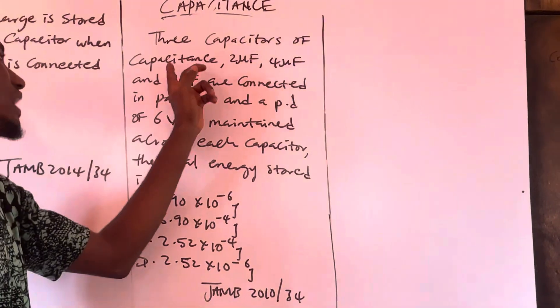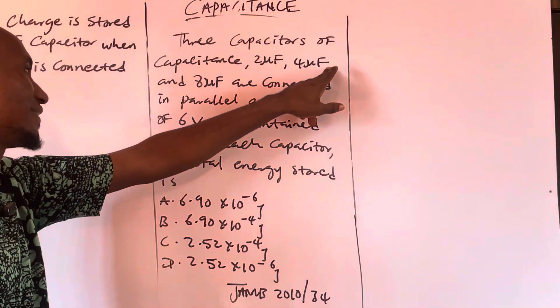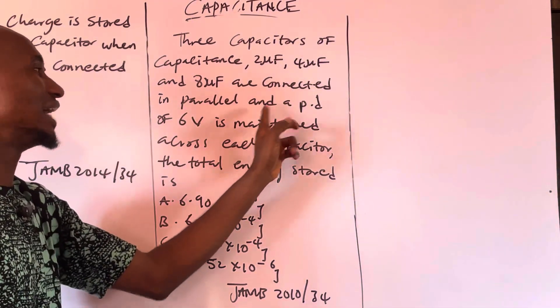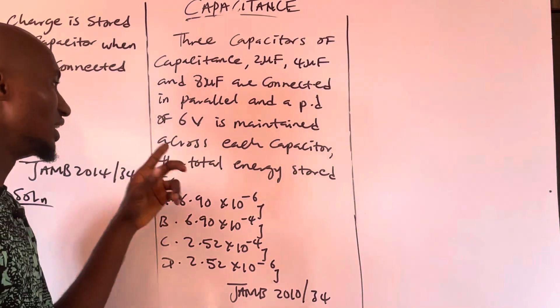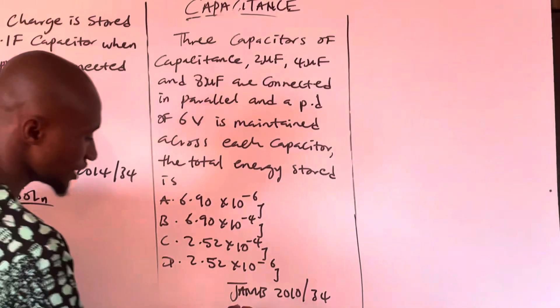It says 3 capacitors—capacitors of capacitance 2 microfarads, 4 microfarads, and 8 microfarads are connected in parallel, and a PD of 6 volts is maintained across each capacitor. The total energy stored is what we need to find.